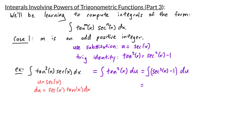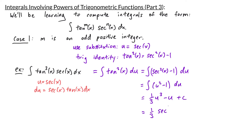Substituting u equals secant of x, we get the integral of u squared minus 1 du. The antiderivative here is one-third u cubed minus u plus c. Finally, we can rewrite this back in terms of x to get one-third secant cubed of x minus secant of x plus c. And that's our final answer.